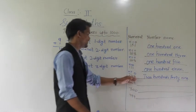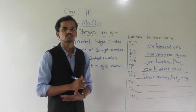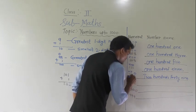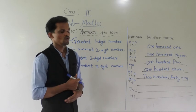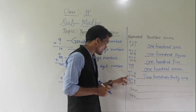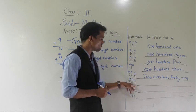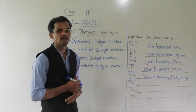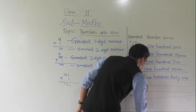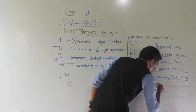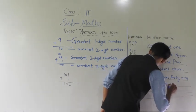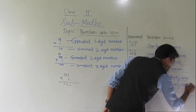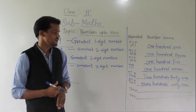Next number: 3, 6, 9. Write the positions — 9 comes at 1 place, 6 comes at 10 place, and 3 comes at 100 place. Read this number as 300; 6 tens means 60, and 9 ones means 9. So, 369: three hundred and sixty-nine.